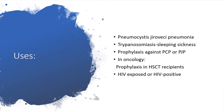Uses: Pentamidine is very useful in handling Pneumocystis jirovecii pneumonia in HIV/AIDS patients, and also in African trypanosomiasis, known as sleeping sickness. It is also very useful as prophylaxis against PCP or PJP — that is Pneumocystis jirovecii pneumonia, as we now know it.